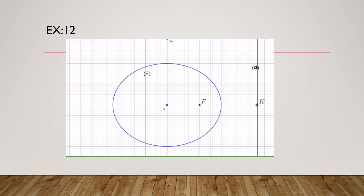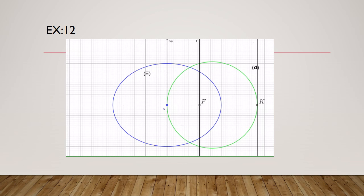We draw the circle of diameter OK — the green circle. Q is a point on this circle. We draw a line passing through F and perpendicular to the focal axis. Q is the intersection of the green circle with this line. Given O, F, and Q, and using that OFQB is a rectangle, we get point B. B' is constructed by symmetry with respect to O.